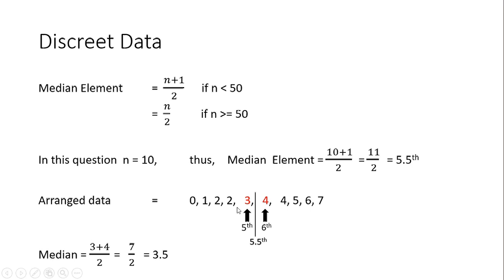We need to find the 5.5th element once the data is arranged in order, but we don't have a 5.5th element — we have the fifth and the sixth elements. So the 5.5th is in the middle of those. We take the fifth element and the sixth element and take their average. The fifth element is 3 and the sixth is 4; 3 + 4 = 7, divided by 2 gives 3.5. So the median value is 3.5.